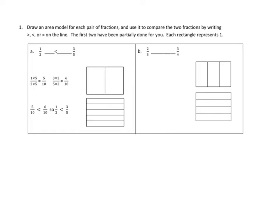Take a look at number 1. I'll do 1A and 1B with you together, and those are the two that they start to get at in the book. Draw an area model for each pair of fractions and use it to compare the two fractions by writing greater than, less than, or equal to on the line. The first two have been partially done for you. Each rectangle represents one.